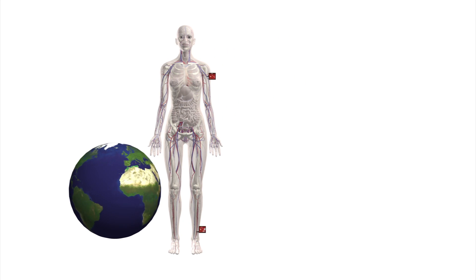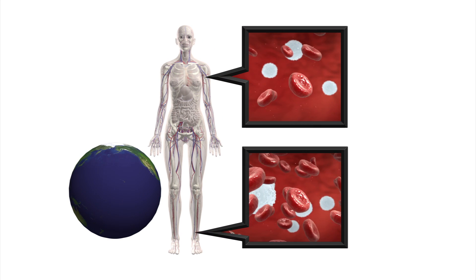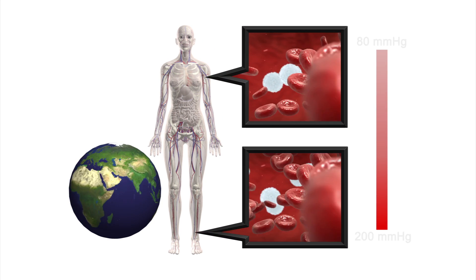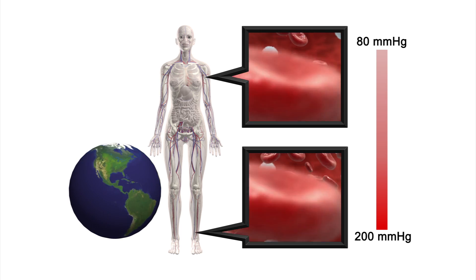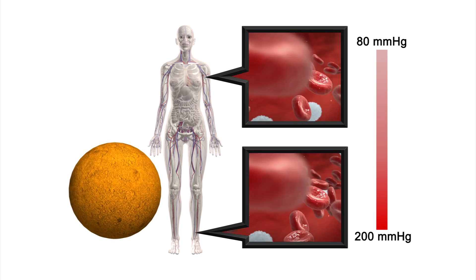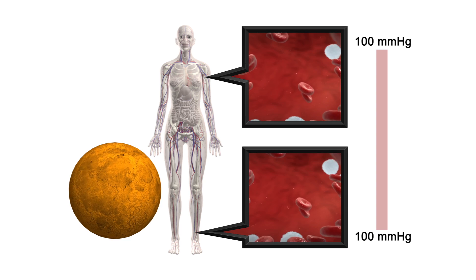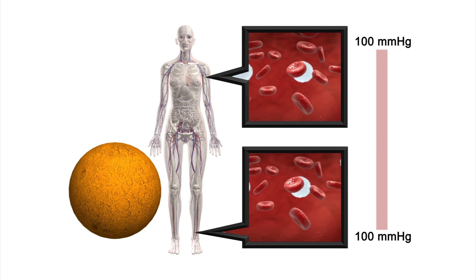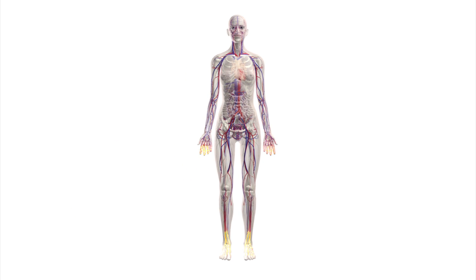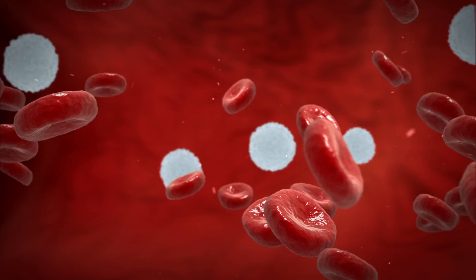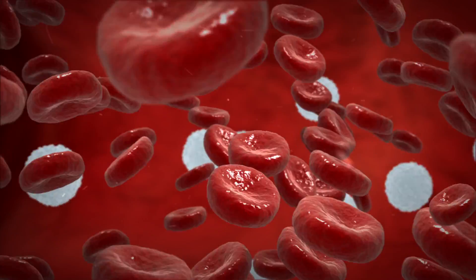On Earth, blood pressure in humans is lowest in the head and highest in the feet. On Mars, reduced gravity would cause blood to become evenly distributed throughout the body, causing the body's gradient blood pressure to become uniform and making the head look puffy.